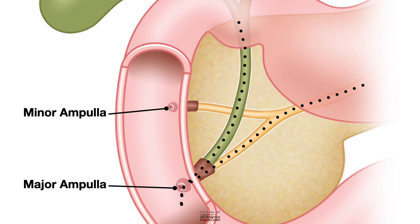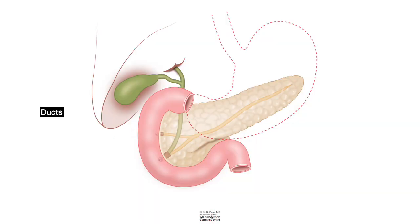The majority of pancreatic juice enters the duodenum through the major ampulla. A little bit comes out through the minor ampulla. So we have the common bile duct and the main pancreatic duct opening into the major ampulla, and the accessory pancreatic duct opening through the minor ampulla. The main pancreatic duct drains pancreatic enzymes, which are important for digestion of protein, fat, and carbohydrates.